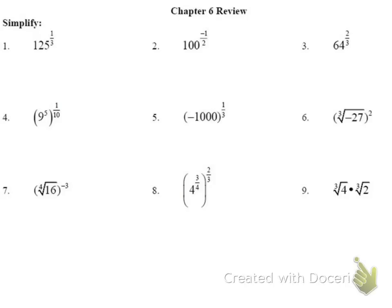This is the Chapter 6 review, which covers Chapter 6 in the Algebra 2 textbook. Starting with number 1: we have 125 to the 1/3 power. If we change this into radical form, it's really the cube root of 125 — or what number cubed gives us 125? That would be 5.